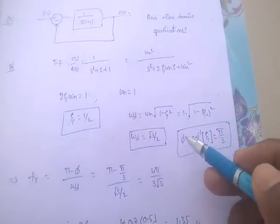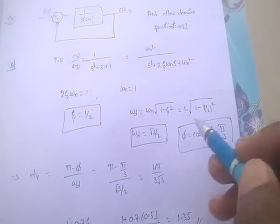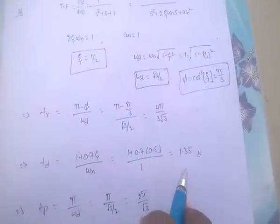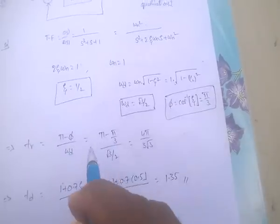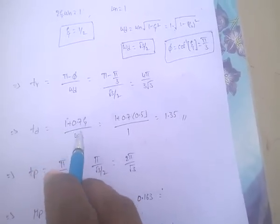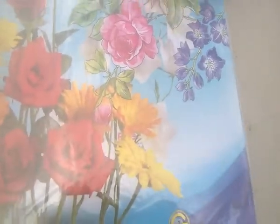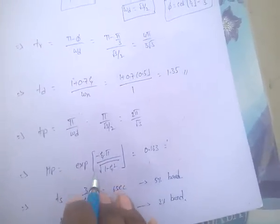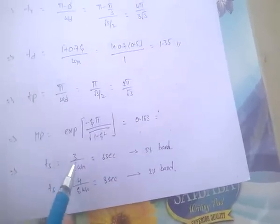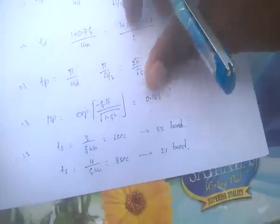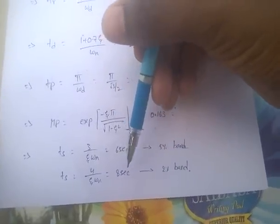Delay time Td = (1 + 0.7ζ) / ωn — substituting values gives the answer. Peak overshoot mp = e^(−ζπ / √(1 − ζ²)) = 0.163. Settling time for 5% tolerance band: Ts = 3 / (ζωn) = 6 seconds. For 2% tolerance band: Ts = 4 / (ζωn) = 8 seconds.